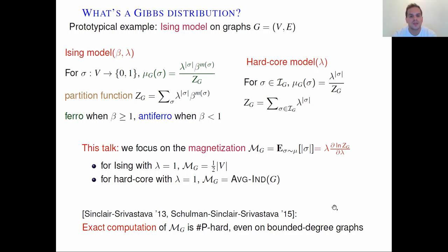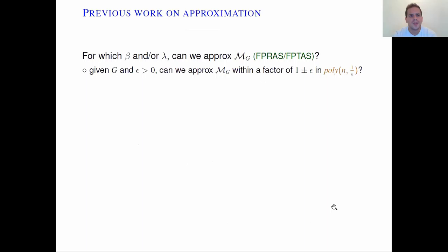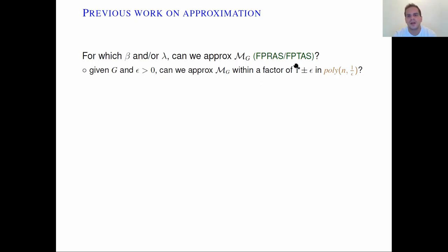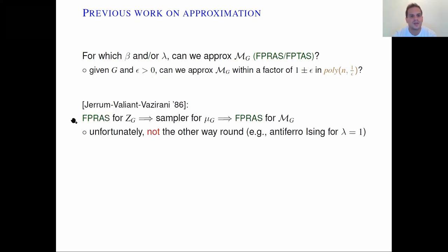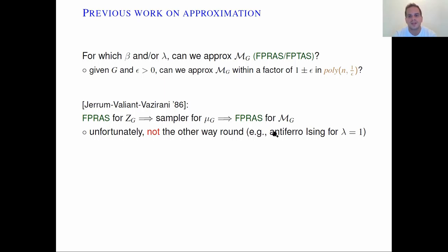So we'll instead focus on approximating the magnetization, understanding for which parameters beta and lambda we can approximate it. We are interested in relative error algorithms, and the holy grail is whether we have an FPRAS or FPTAS. It is known that an FPRAS for the partition function implies an approximate sampler for the Gibbs distribution, which in turn implies an FPRAS for the magnetization. Unfortunately, it doesn't work the other way around — for the antiferromagnetic Ising model with lambda equals 1, magnetization is trivial to compute, but it is hard to approximate the partition function.